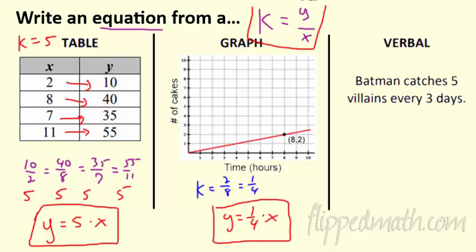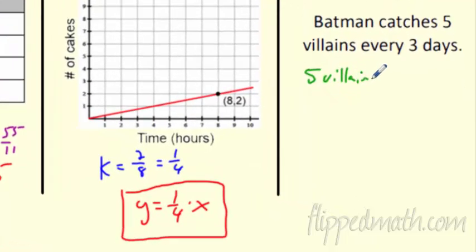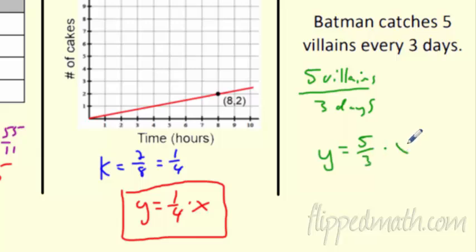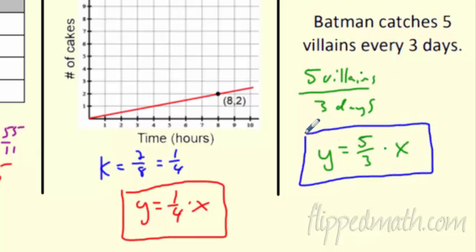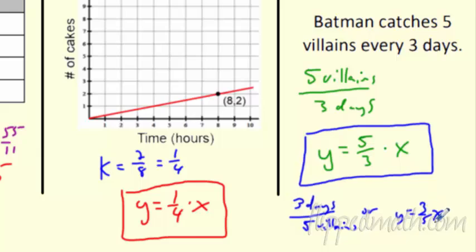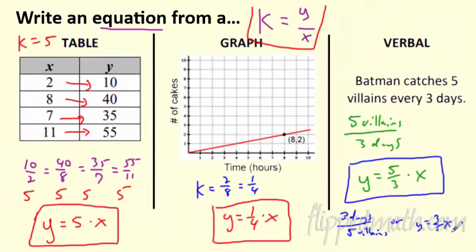What if it's a verbal problem? Batman catches 5 villains every 3 days. You could say the unit rate is 5 villains every 3 days — we usually like to keep time on the bottom. So what is k? It's just 5 over 3. So it's going to be y equals 5 over 3 times x. This one's kind of tricky. You could have also said every 3 days I catch 5 villains — that's also legit. We just have to be careful what is your x and what is your y. It would have been totally okay to say 3 fifths x. We're not going to mark it wrong — it just depends what x and y stand for.